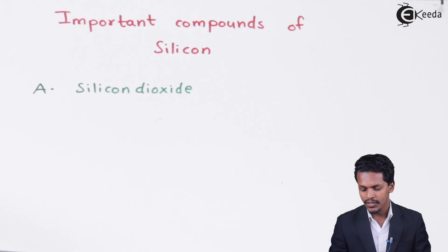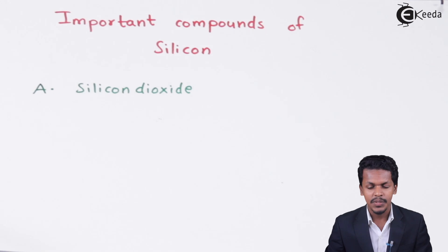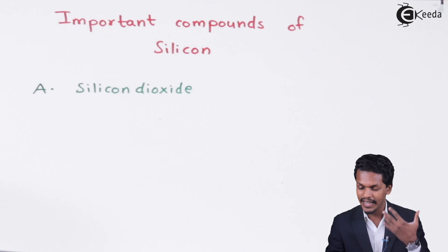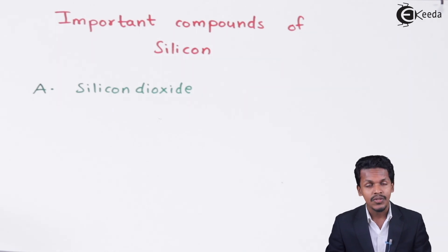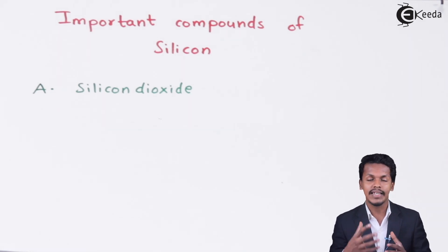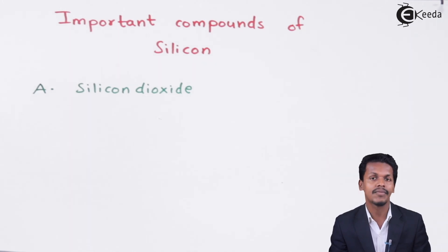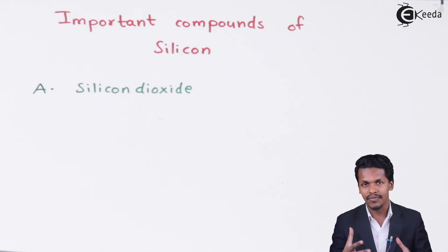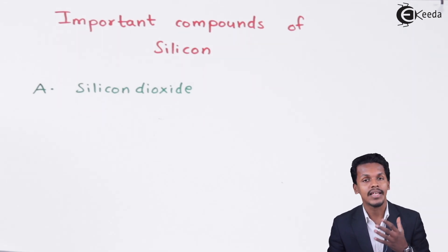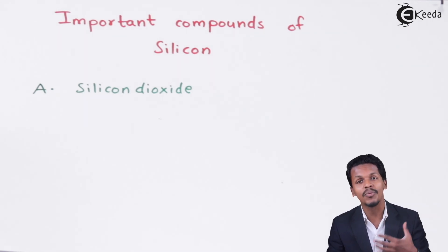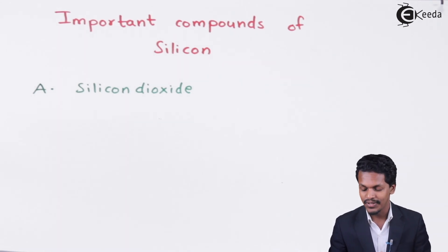If we compare silicon and oxygen, silicon has an electronegativity of 1.8 while oxygen has an electronegativity of 3.5. Because of this, the bond that forms between silicon and oxygen is ionic in nature. But silicon doesn't form a bond with only one oxygen — it forms bonds with other oxygen atoms also, and the compound that forms due to SiO2 is basically covalent in nature. That is the reason that SiO2 cannot be dissolved in water.